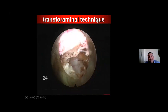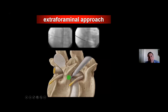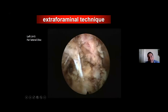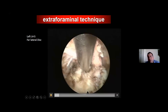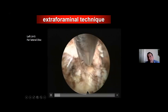This is the extraforaminal approach. We approach the safe triangle and then go up along the SAP to find the root axilla and take the fragment out. Some people do it a different way — going inside first and then taking the endoscope outside. This is the SAP you can see, and I will show you the nerve root now.